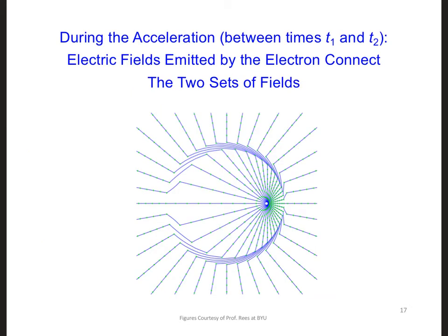And this is what we end up with. In other words, the acceleration of the electron creates a disturbance in the electric field. You can see that here.